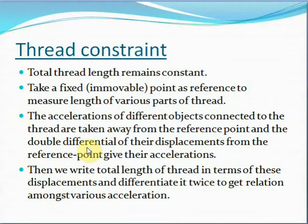Now we'll see how to use thread constraint in solving problems based on pulley systems. As we know, the total thread length remains constant in a pulley system. So what we do is we take a fixed point as reference and measure the length of various parts of the thread with this reference point. The accelerations of different objects which are connected to the thread are taken away from this reference point, and the double differential of their displacements from the reference point gives their acceleration.